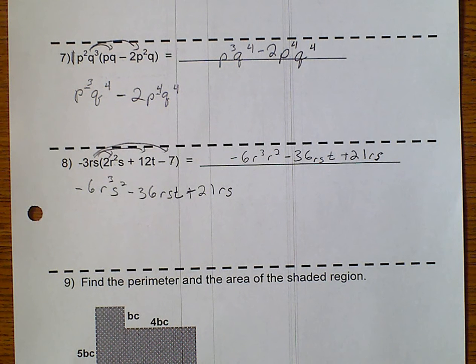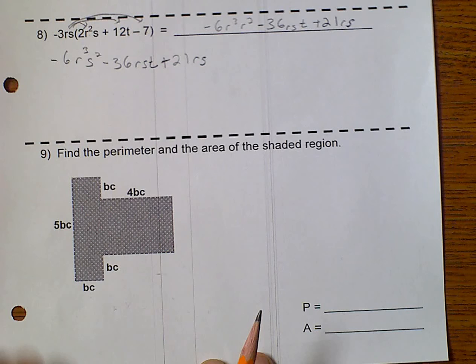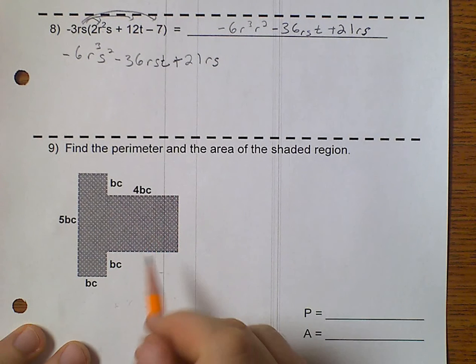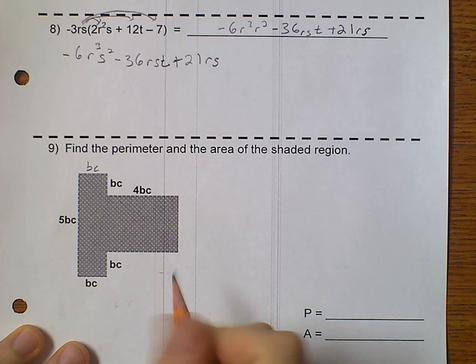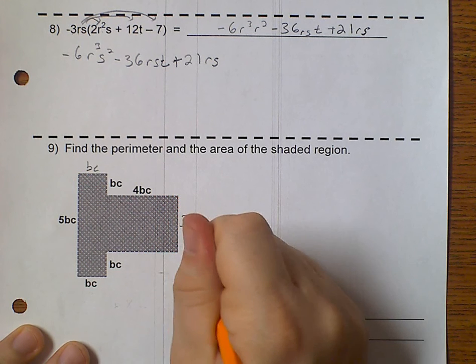And, now for our last example, we want to find the perimeter and the area. Well, this is obviously bc, because that's bc. And, this would be 3 bc.